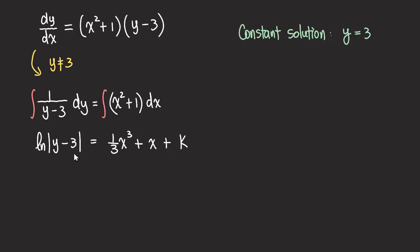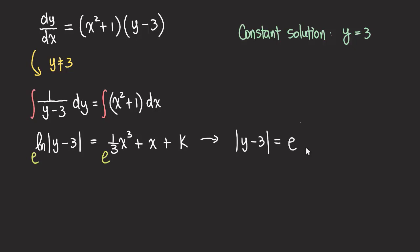We've basically finished solving the equation, but we try to isolate y if possible. It is possible here. We can exponentiate both sides because of the ln function. We put e on both sides, and the e and the ln cancel each other out, because we're composing inverse functions. So we get the absolute value of y minus three equals e to the one over three x cubed plus x plus k.